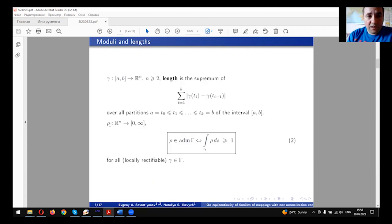A Borel function ρ, Borel measurable function ρ, defined in R^n, n bigger than 2, is called admissible for a path family Γ if ρ satisfies relation (2) for any locally rectifiable path γ from the family Γ.